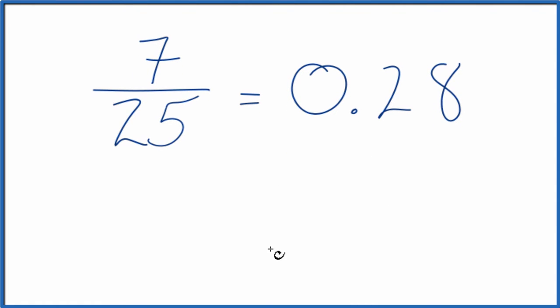You could also take 7 here and see how many times 25 goes into 7. So we're dividing 7 by 25. 25 doesn't go into 7, so let's call it 70, put a 0 with a point up here.